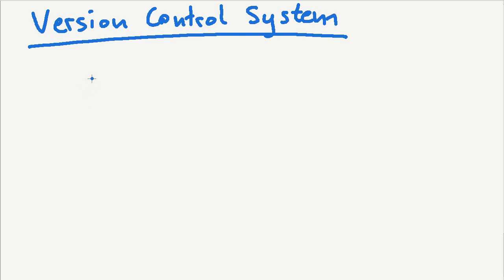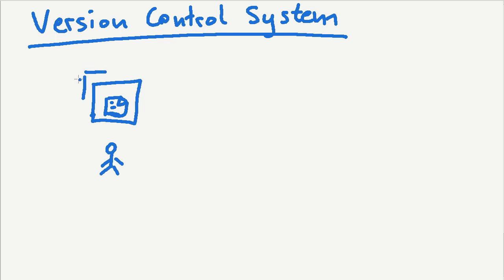First we should share that there are basically two major use cases that differ from each other. You have use case number one, where this is your computer and this is you. You might want to have some files versioned — maybe your bachelor thesis — and you want to give it some version numbers just to be sure that you can always go back in history. And no one else except you is going to access or change these files.